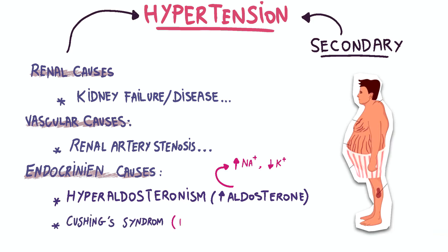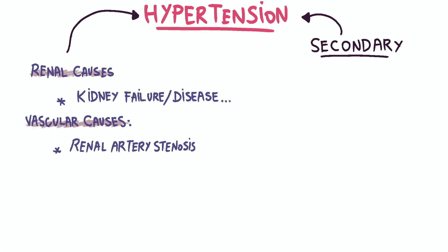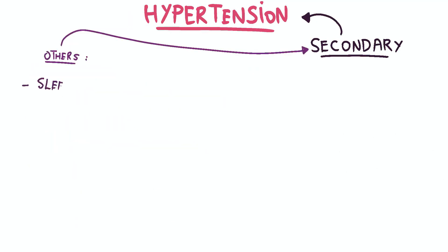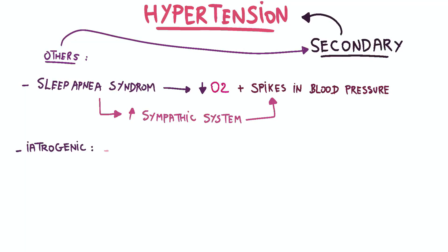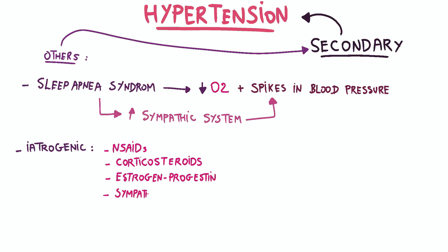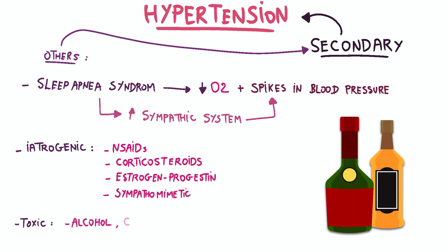Cushing's syndrome, characterized by excessive cortisol production, and sleep apnea syndrome, which causes repeated episodes of low oxygen levels and spikes in blood pressure due to increased sympathetic nervous system activity, are also causes. Additionally, certain medications such as anti-inflammatory drugs, corticosteroids, estrogen, and sympathomimetic drugs, as well as toxic causes like alcohol and cocaine, can induce secondary hypertension.